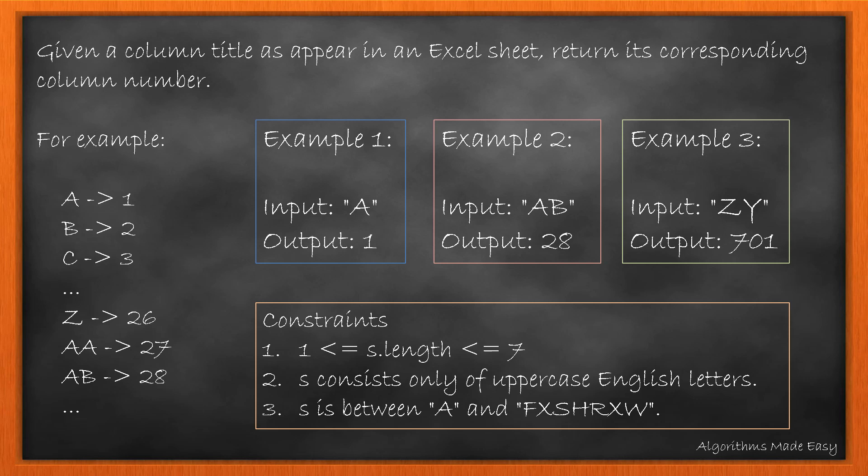Given a column title as it appears in an Excel sheet, return its corresponding column number where A is 1, B is 2, while AA is 27 and so on. There are a few constraints attached with this question. S contains uppercase letters that can be of length 1 to 7. The boundary values are also provided in the question.